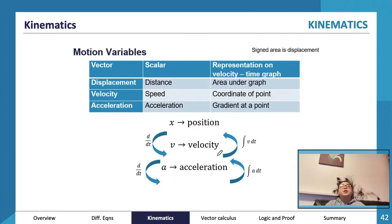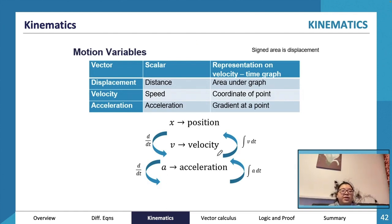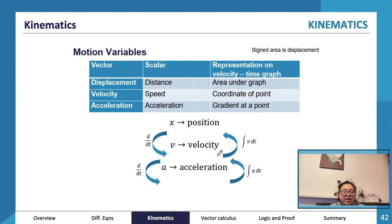You'll hear about motion variables in both Specialist and Methods. You can have vector quantities and scalar quantities. Vector quantities have a magnitude and a direction — things like displacement, velocity, and acceleration. The scalar equivalents are distance, speed, and acceleration can actually be both.